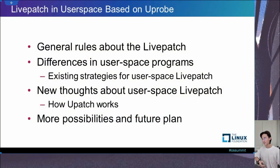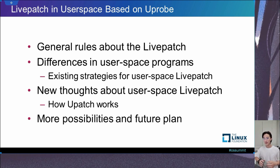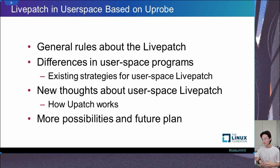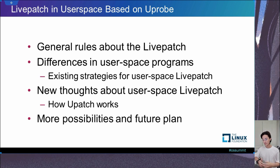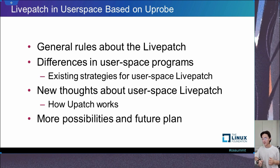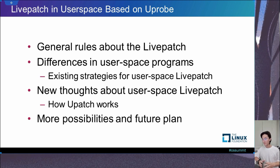This presentation will be divided into four parts. First, we will talk about the general rules of the live patch mechanism — what is the critical problem and how does live patch take effect? Second, we will talk about the differences between the kernel and user-space programs. Third, we will talk about our practice of the live patch in user-space using UProbe, a trace mechanism in the Linux kernel. Our developing project is called UPatch. Finally, we will talk about our future plan.